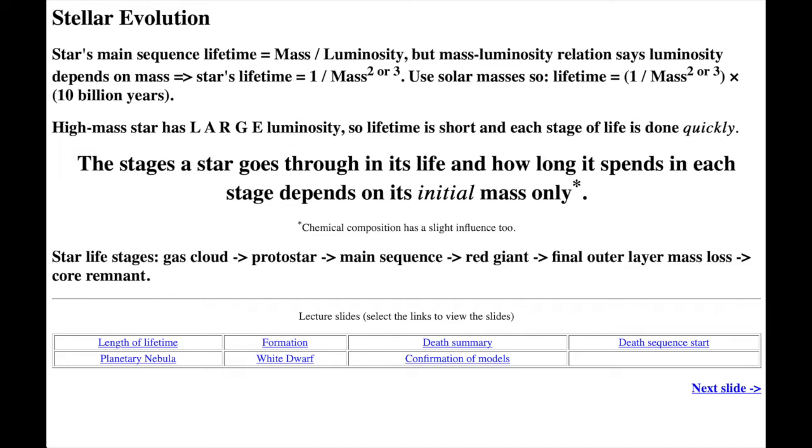Recall from the end of the previous lecture that the mass-luminosity relation says the luminosity depends on the star's initial mass. So, the main sequence time is equal to 1 over mass raised to power p, where p is equal to 2 for the high mass stars and p equals 3 for the common low mass stars. If you put everything relative to the sun in solar masses, it becomes the main sequence time is equal to 1 over mass to the power p times 10 billion years.